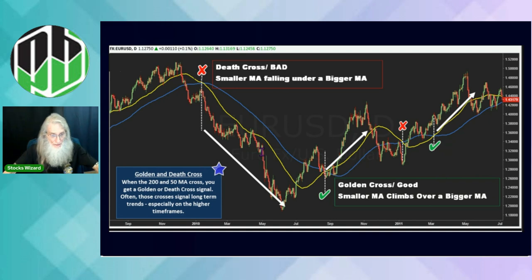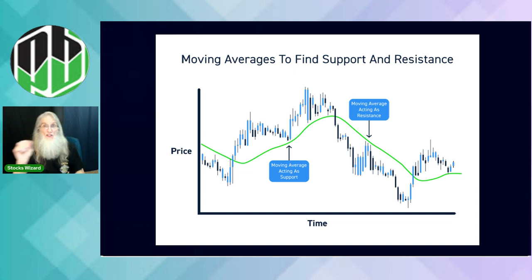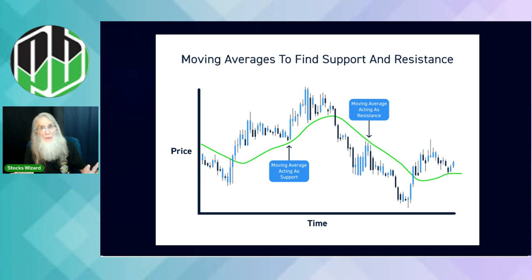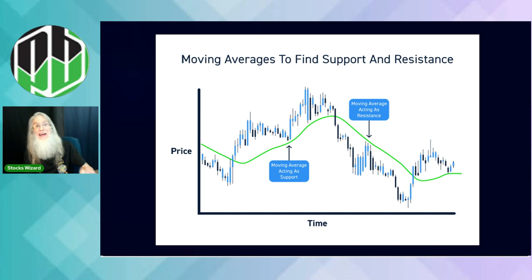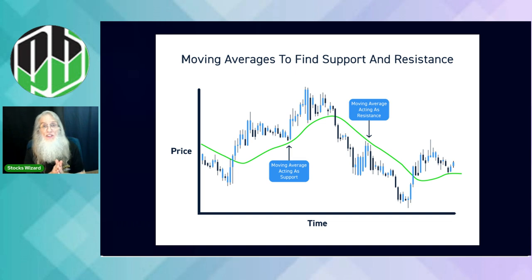Moving averages can be supports and resistances — most of the time they are. If you're familiar with supports and resistances, we personally draw those lines on the chart at placements where the price likes to change direction — bouncing off the top and falling, or hitting the bottom and bouncing up. Those supports and resistances are permanently placed — they never move, never get updated. Our supports and resistances with MAs are dynamic because they're constantly moving. When the price is underneath an MA it is a resistance; when the price is on top of that MA it is a support.